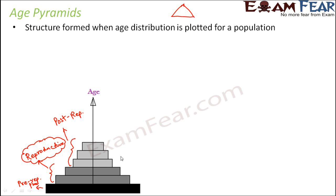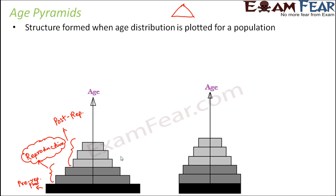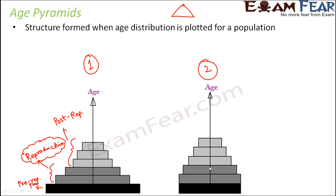This is one age pyramid. Let us look at another. In scenario 2, you see that the pre-reproductive phase and the reproductive phase are similar — the number of individuals is comparable and the reduction is pretty less. As the age is increasing, the number of individuals is reducing, but the decrease is less when compared to scenario 1. So in scenario 2, the decrease is less.